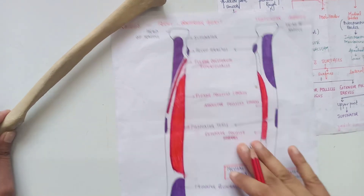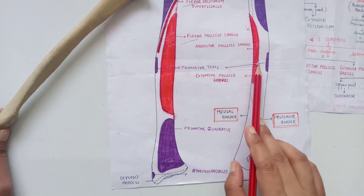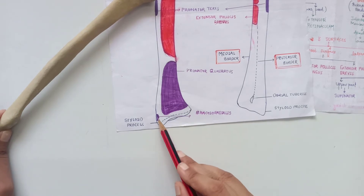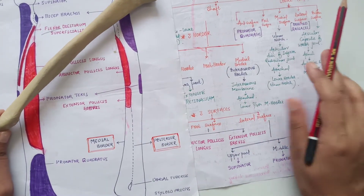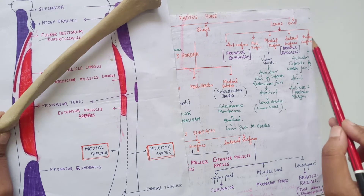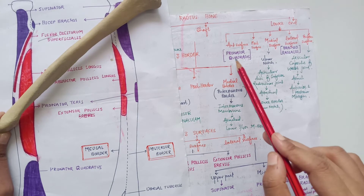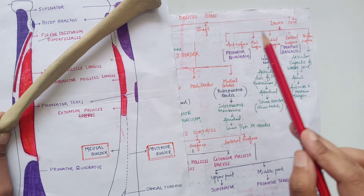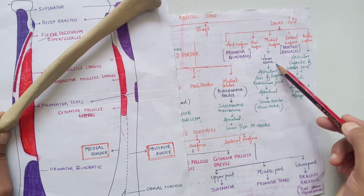The supinator muscle supinates the forearm. In the middle part, pronator teres is present, and near the styloid process, brachioradialis has its insertion. At the lower end, there are five surfaces: anterior surface, posterior surface, medial surface, lateral surface, and inferior surface. On the anterior surface, pronator quadratus is present — quadratus means quadrangular in shape, and pronator means it helps in pronation. On the medial surface, the ulnar notch is present.